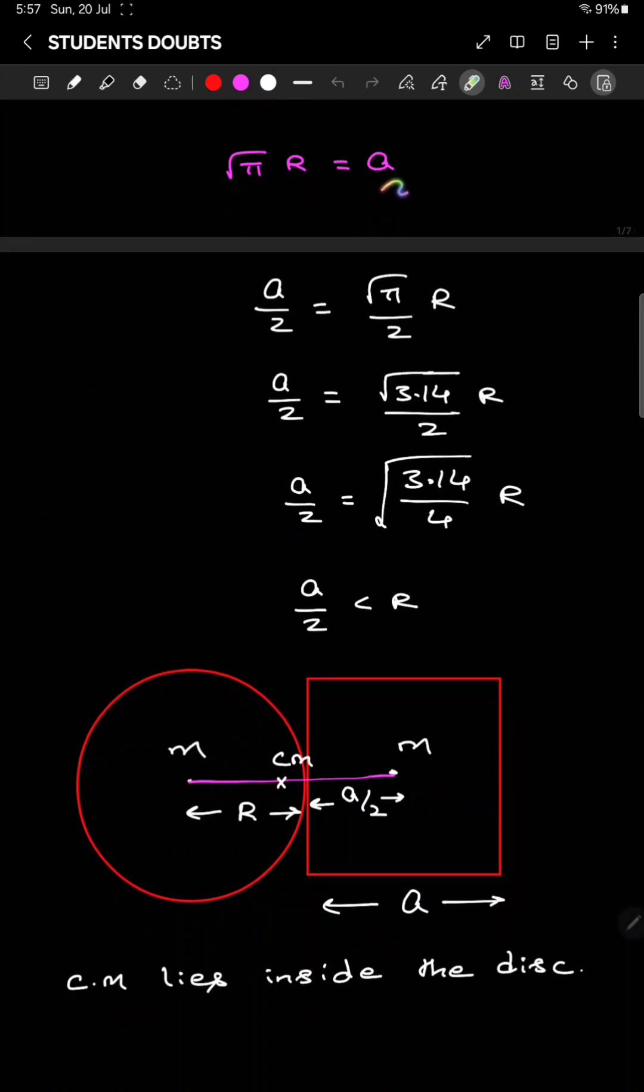Now, root pi R equal to a I got. Divide two both sides then a by 2 equal to root pi by 2 into R.